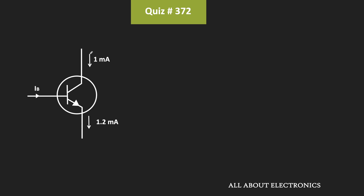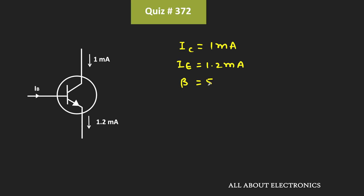We have been given the collector and the emitter current of this transistor. This collector current IC is equal to 1 mA, while this emitter current IE is equal to 1.2 mA. Moreover, the beta of the transistor is equal to 50.